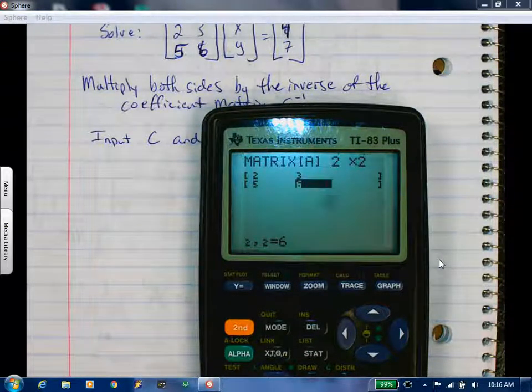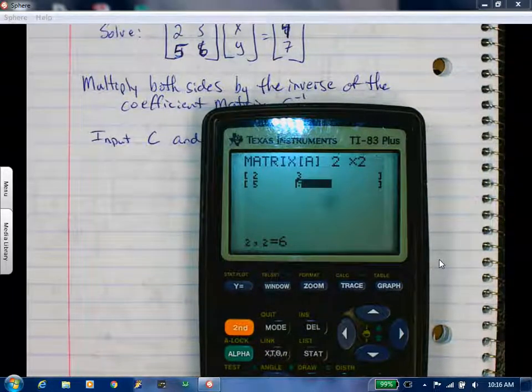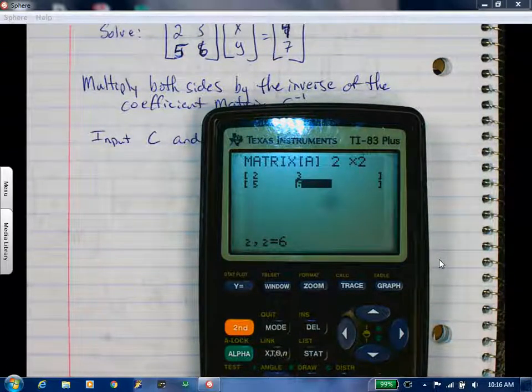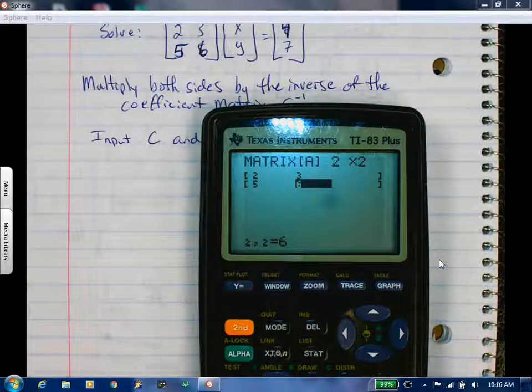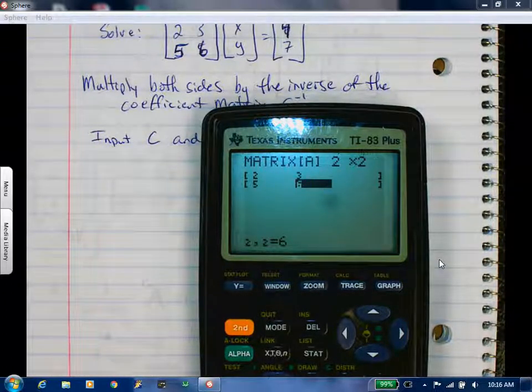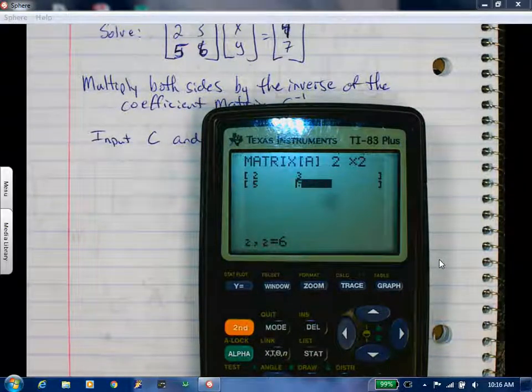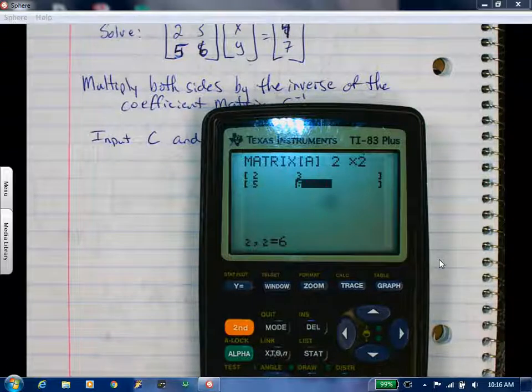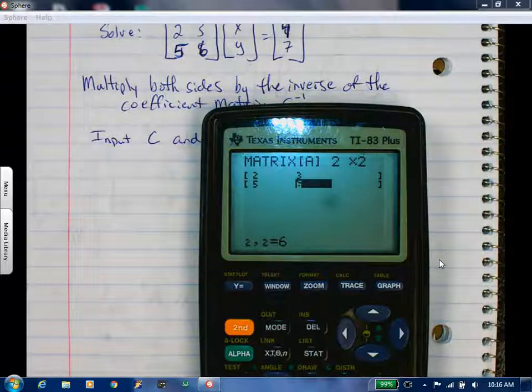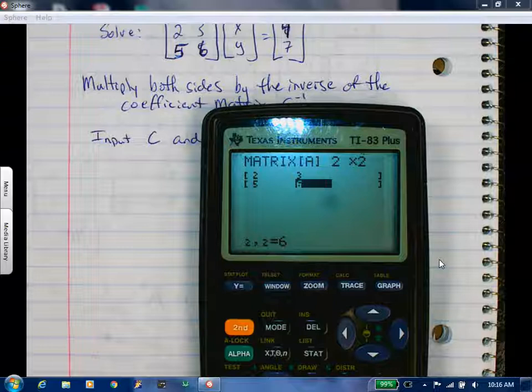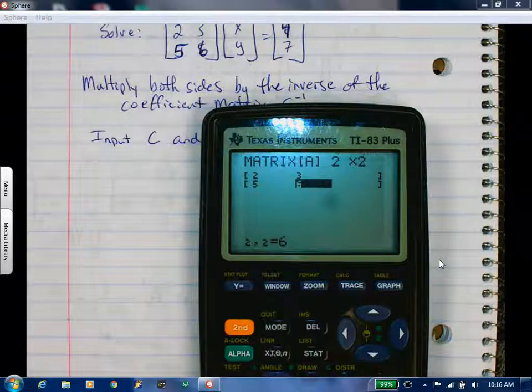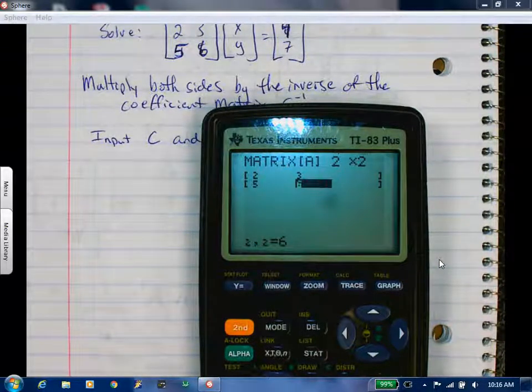We're going to go ahead with matrix A. Give me a 2 by 2. And now you can put your numbers in. 2, 3 by 2. The values are 2, 3, 5, 6. We did everything. Are we getting things in okay?